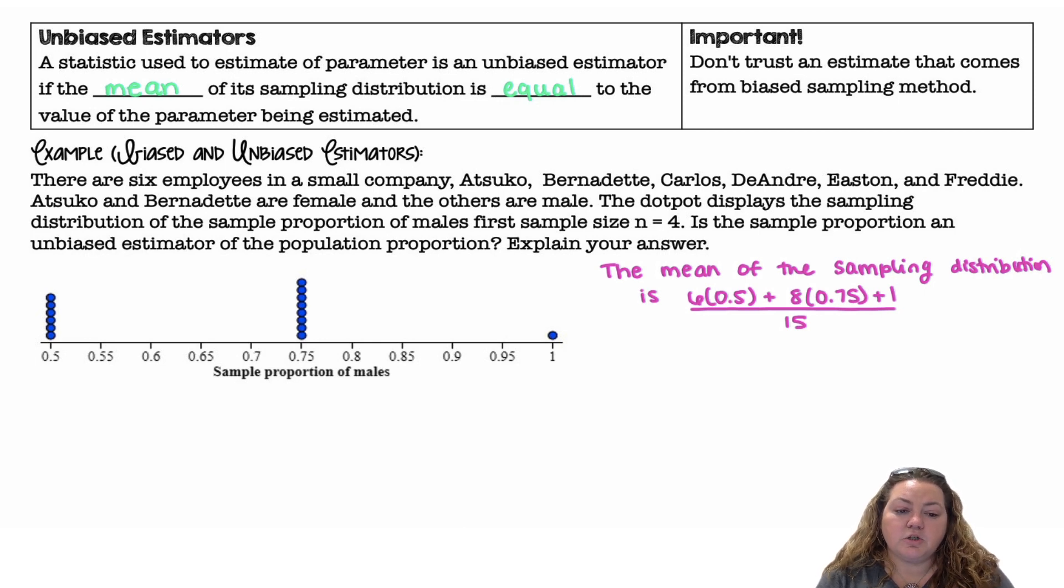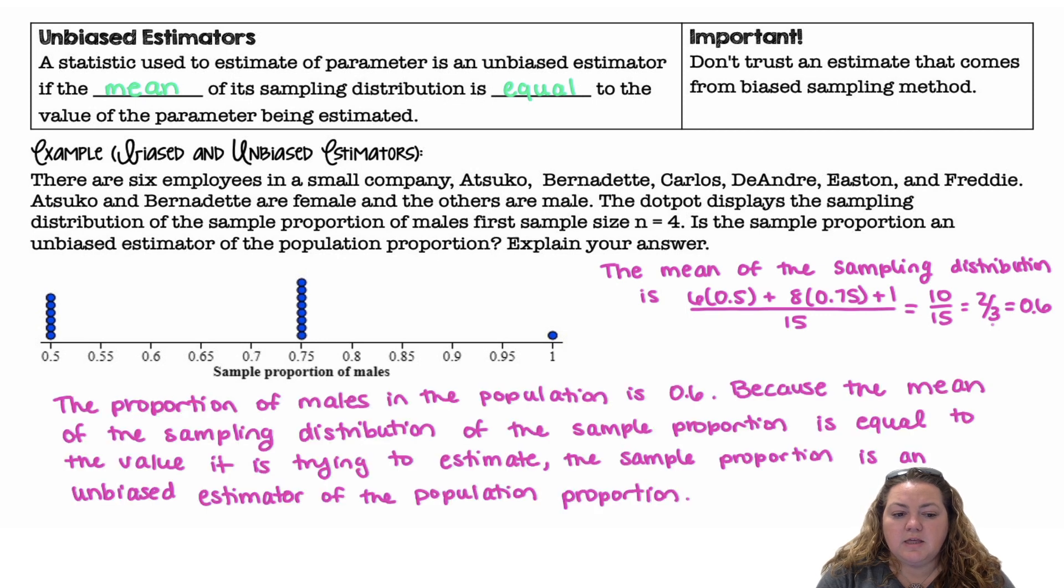So the mean of the sampling distribution is: I have 6 at 0.5, I have 8 at 0.75, and I have 1 at 1 out of 15 total dots. So that gives me 0.6 in the center of all the points.